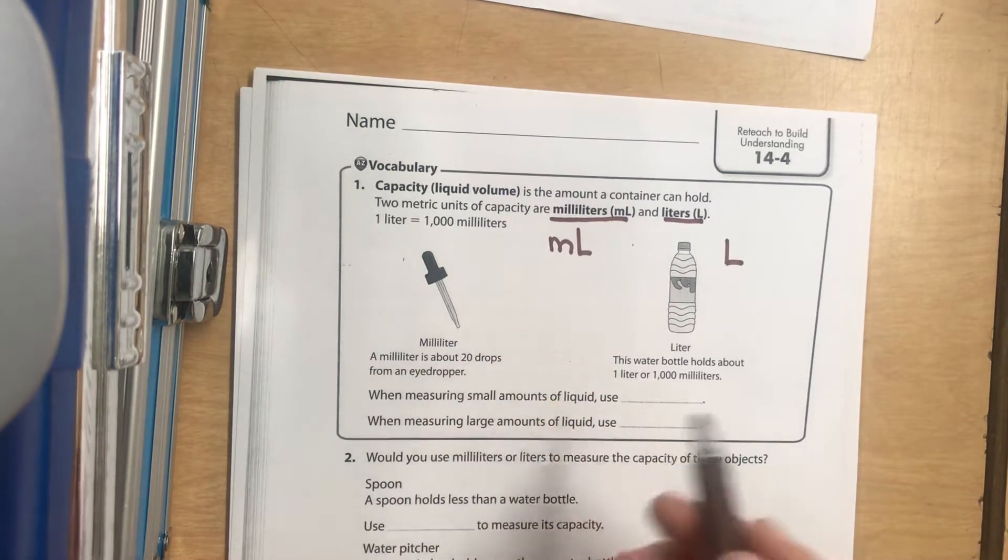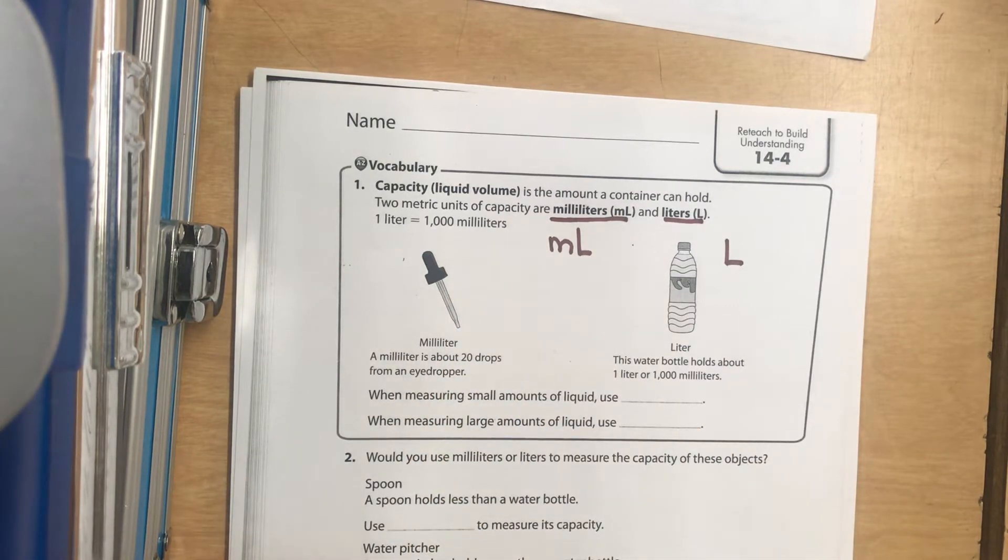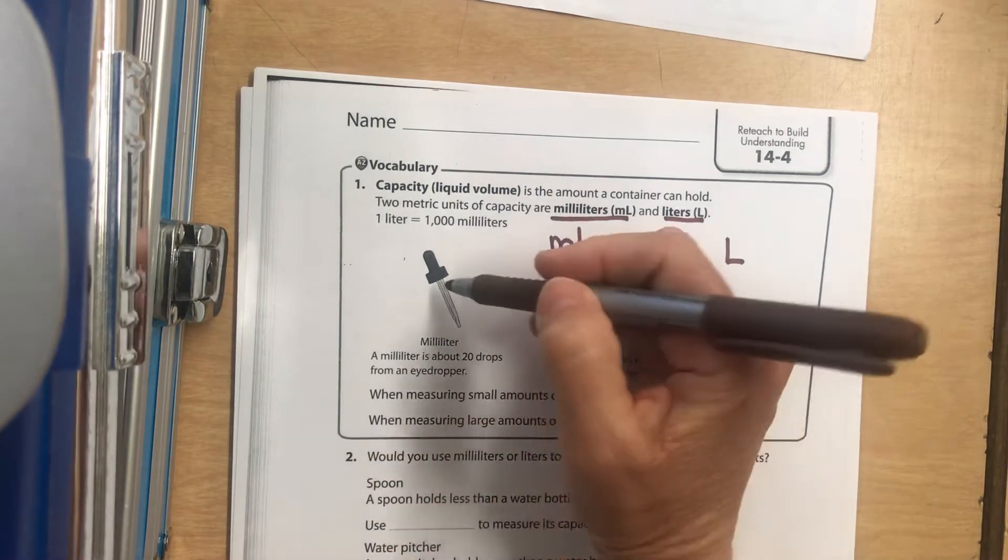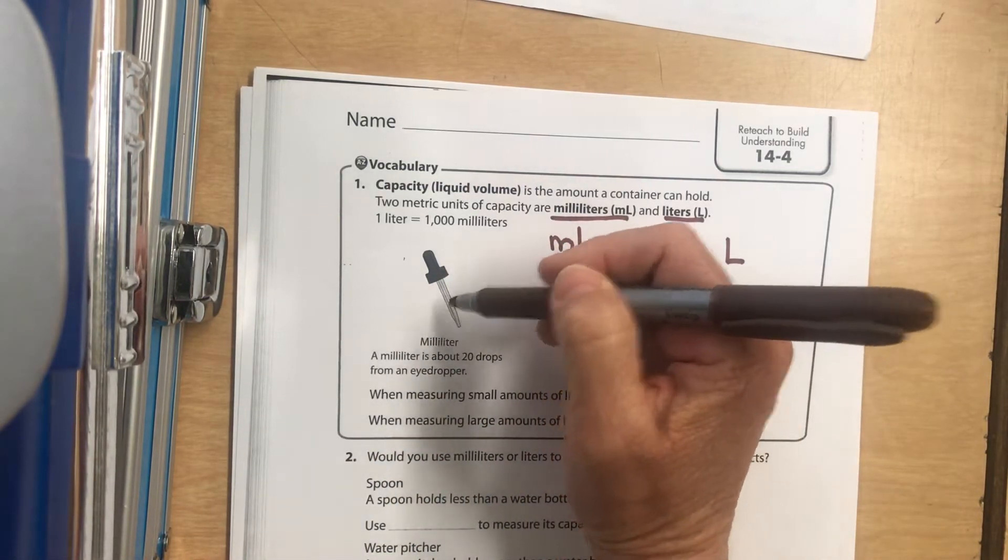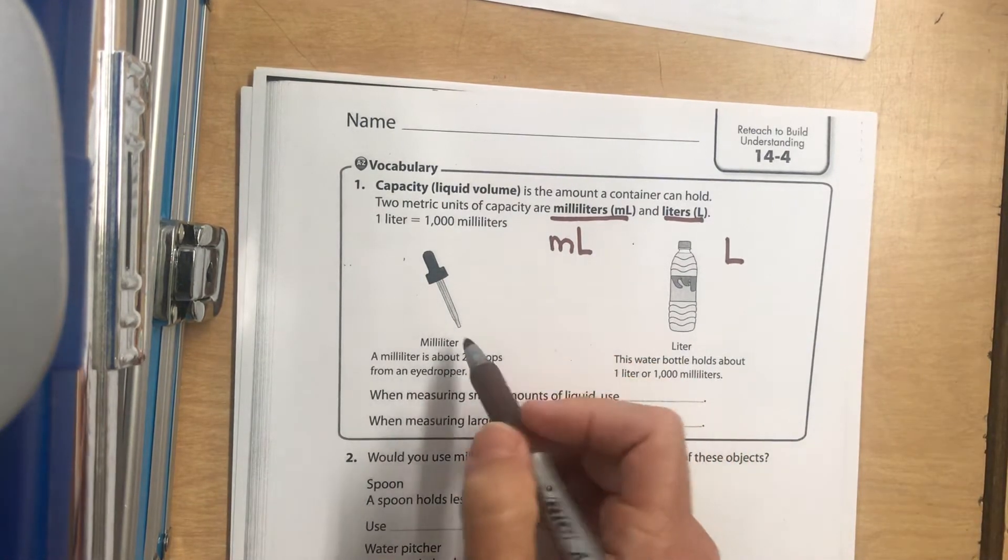Milliliter is much smaller. If you had this eyedropper filled and you dropped out about 20 drops out of it, that would be one milliliter. So this is probably about it being filled. We'll play with some of them in class and you can get a better idea of it.